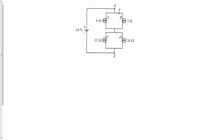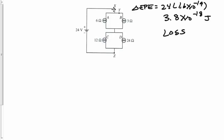So if I want to calculate the actual change in electric potential energy, that's going to be equal to 24 volts multiplied by 1.6 times 10 to the minus 19. That's the charge on an electron or a proton. So that would be 3.8 times 10 to the minus 18 joules. Now that's going to be an energy loss because we're going from high potential to low potential, so it's a potential drop.